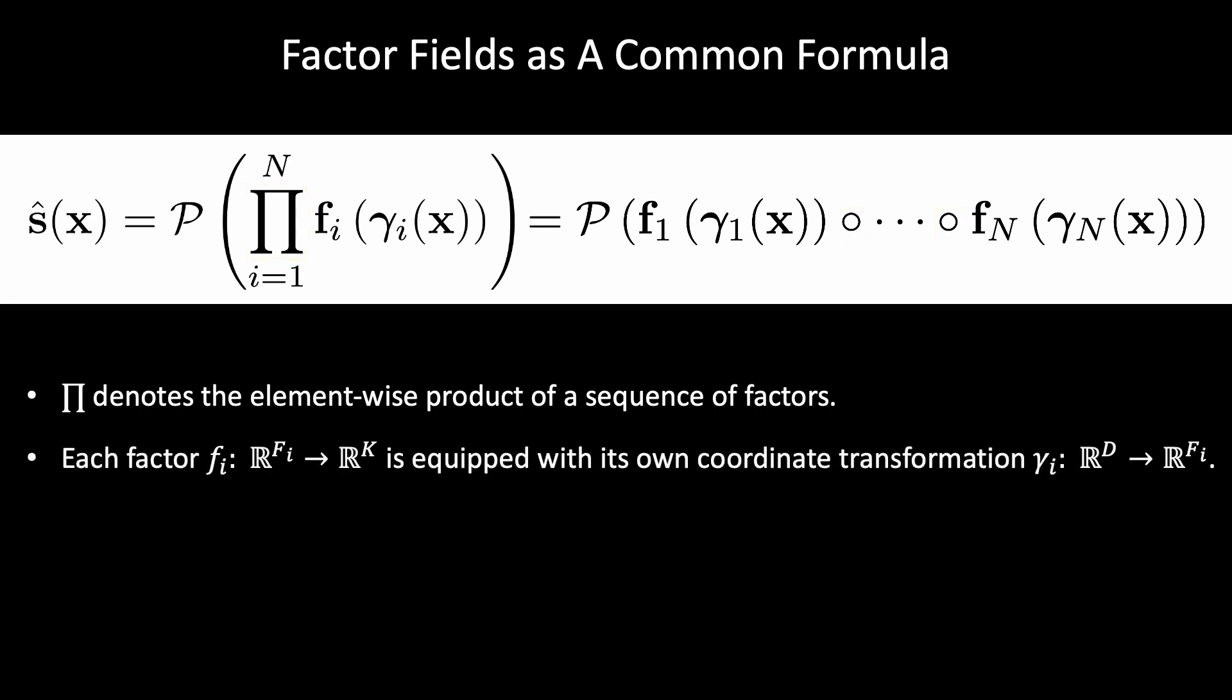Each factor fi is equipped with its own coordinate transformation γi that maps d-dimensional scene coordinate to target field dimensions. Finally, the projection function P maps the Hadamard product to the q-dimensional signal domain.